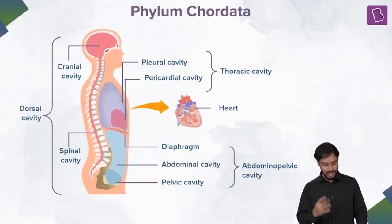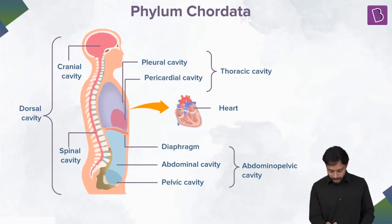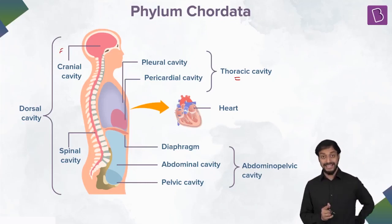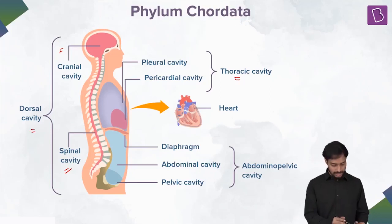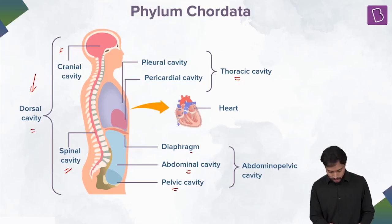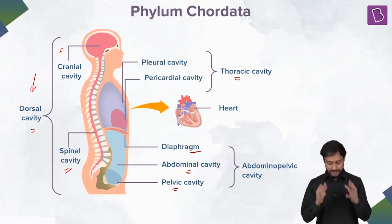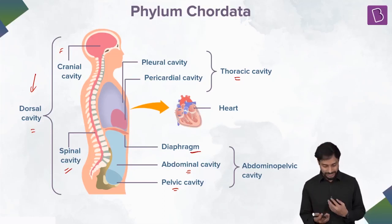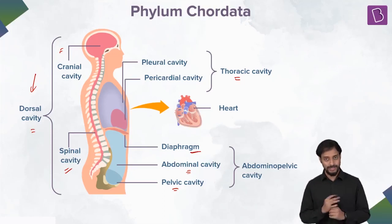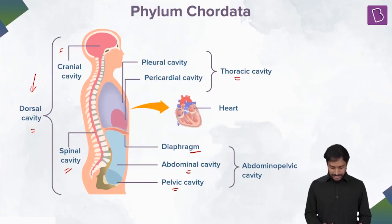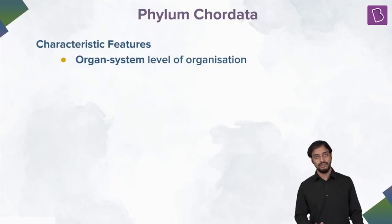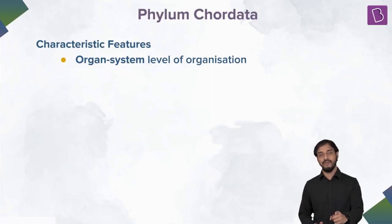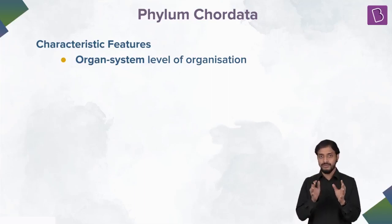In human beings we have many body cavities. You can see the thoracic cavity, cranial cavity, spinal cavity — the cranial and spinal cavities together form the dorsal cavity. There is also the pelvic cavity and abdominal cavity. The heart is located in the thoracic cavity.